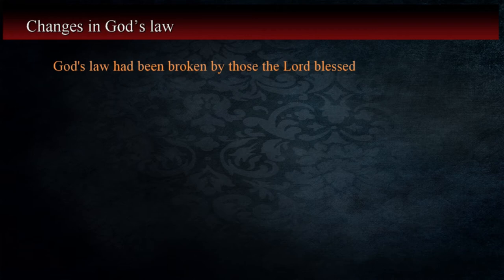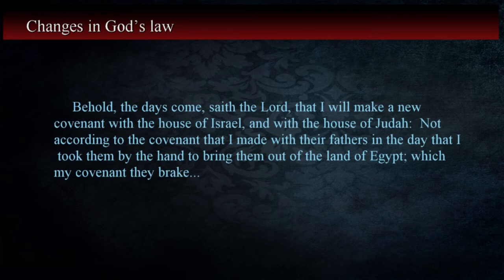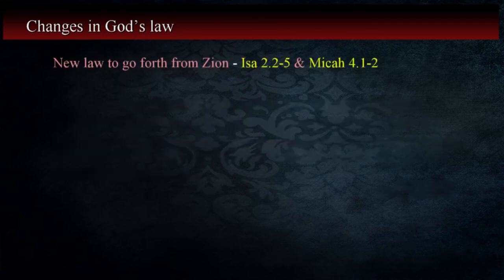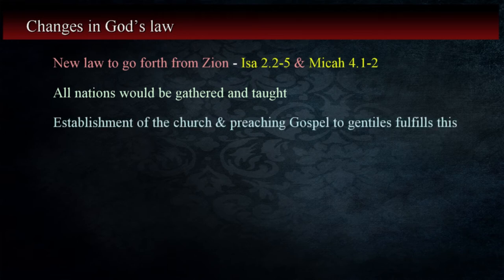God's law had been broken by those who had been blessed by the Lord, and the negative consequences the Lord warned them about were unleashed. The promises God made to save the world through the seed of Abraham, and specifically the house of David, were going to be kept, but the law would be taken away. Jeremiah states: 'Behold, the days come, saith the Lord, that I will make a new covenant with the house of Israel and with the house of Judah, not according to the covenant that I made with their fathers in the day that I took them by the hand to bring them out of the land of Egypt, which my covenant they break' — Jeremiah 31:31-32. Other statements appear in the prophets that point to changes in the law. Isaiah and Micah state that the new law will go forth from Zion and all nations would be gathered and taught, in Isaiah 2:2-5 and Micah 4:1-2.